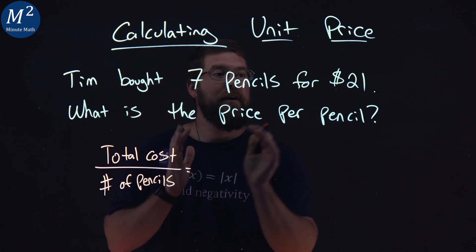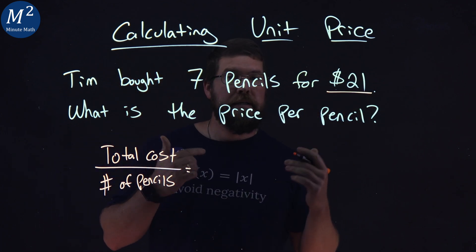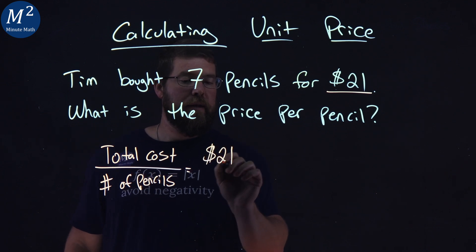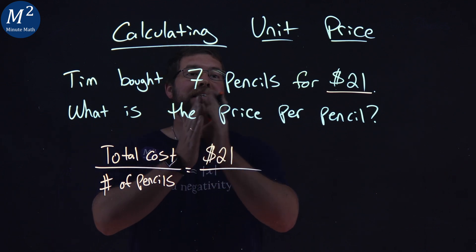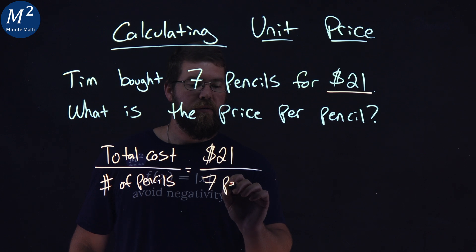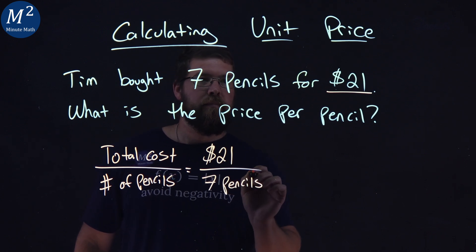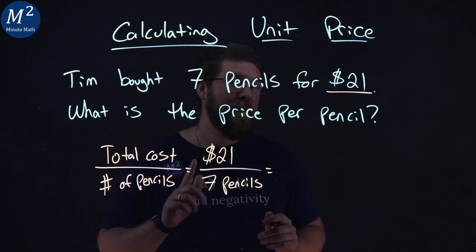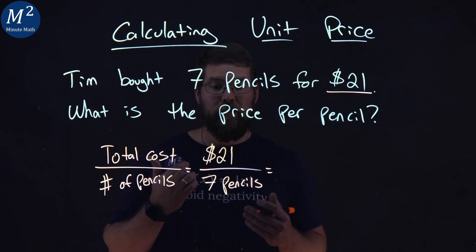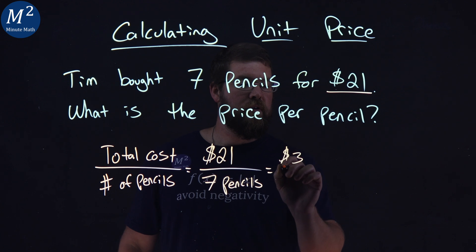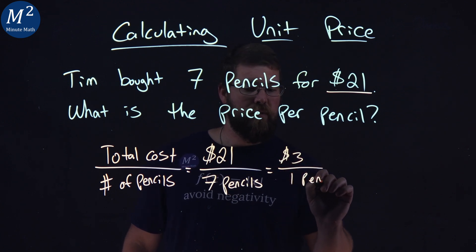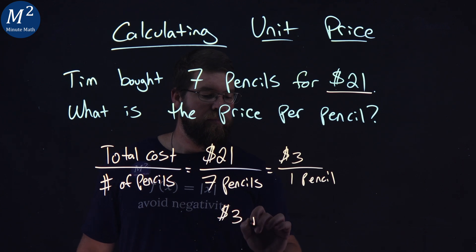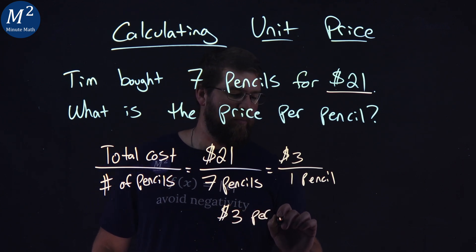Our total cost here in this example is $21 — the cost of all the pencils. And we bought seven pencils. So for $21, we got seven pencils. 21 divided by seven is going to be three. So, three dollars per one pencil.